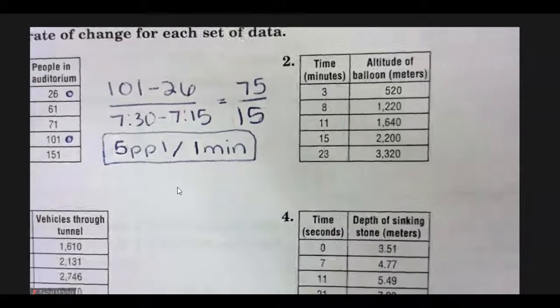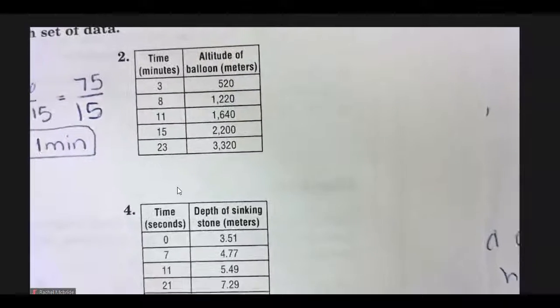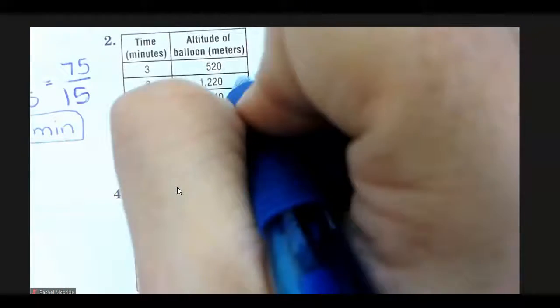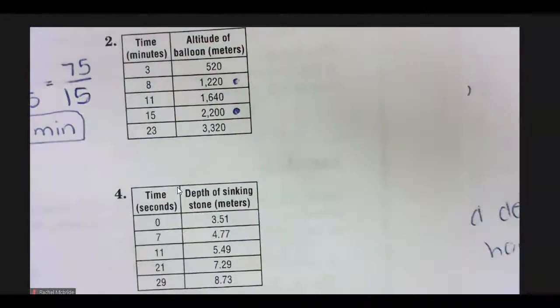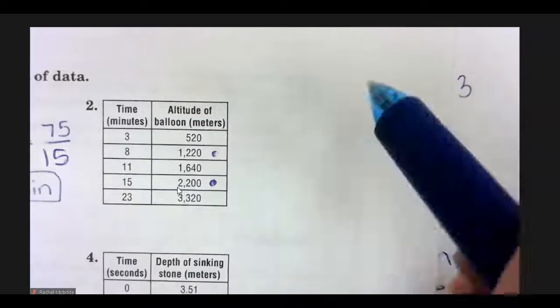And then number 2. We have the altitude of a balloon in time. So, again, you could pick any two times. Maybe I pick the second and the fourth. I could pick the first and the third. It really doesn't matter. So, and again, it doesn't matter if you do the first one minus the second one or the second minus the first. As long as the order matches in the top and the bottom.